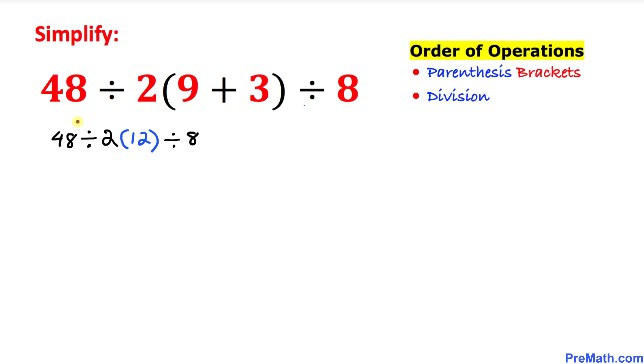We are going to take care of this one: 48 divided by 2. We always go from left to right and whichever comes first we'll take care of that one. So therefore 48 divided by 2 is going to give us 24. So therefore this 24 showed up at this place.